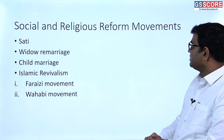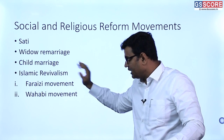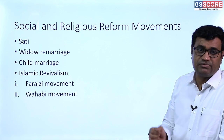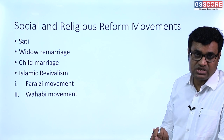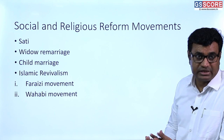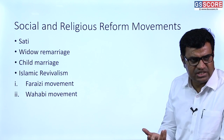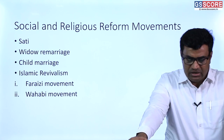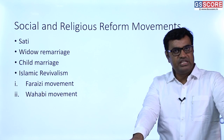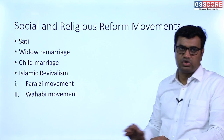Major social reform work included campaigns against Sati — British declared Sati illegal in Bengal in 1829. Widow remarriage was promoted by Ishwar Chandra Vidyasagar; an act was passed in 1856. Child marriage was campaigned against by many Indian reformers; British prohibited it through legislation in 1895. These were social and religious reform movements largely confined to Hindu society.